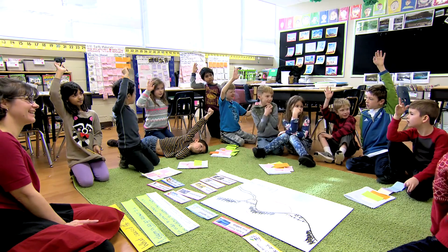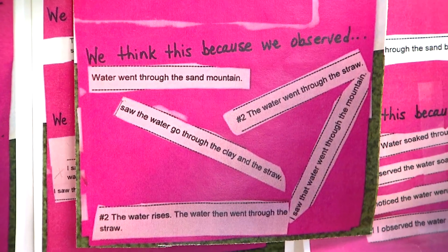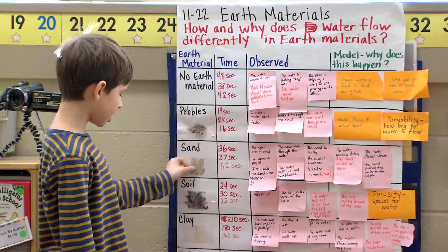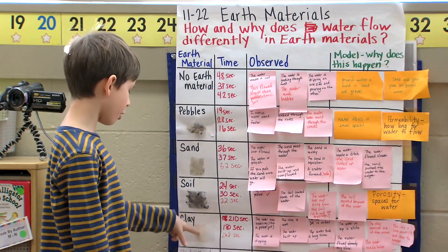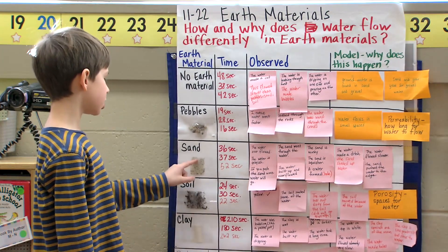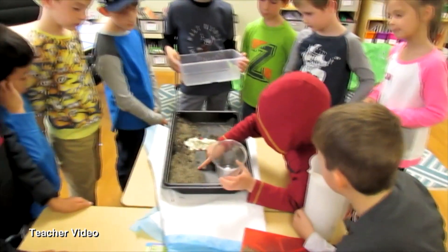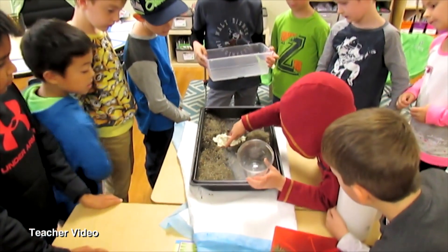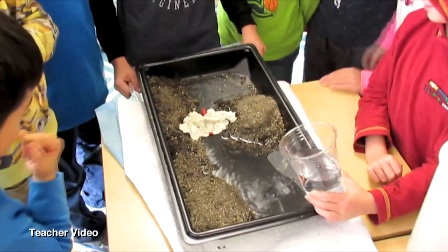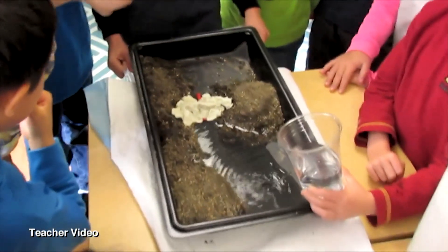Students were able to go to other pieces of evidence to help support this text and what was meant by 'easily.' Students were going to the experiments we had done to talk about the earth materials and whether the water flow easily went through or not.